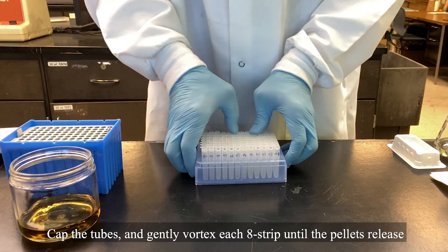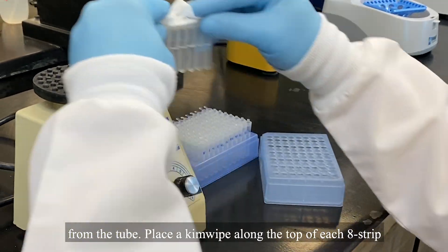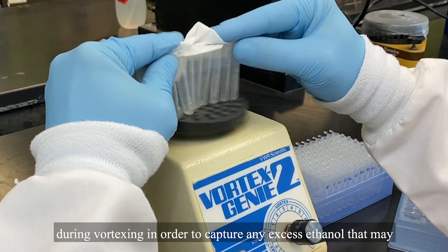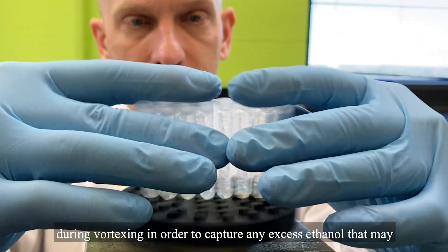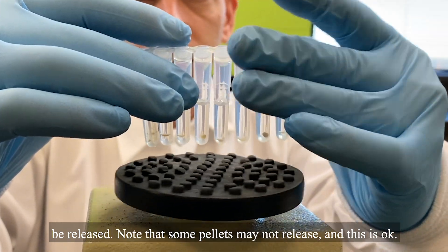Cap the tubes and gently vortex each H strip until the pellets release from the tube. Place a chem wipe along the top of each H strip during vortexing in order to capture any excess ethanol that may be released. Note that some pellets may not release and this is okay.